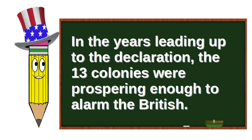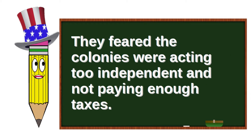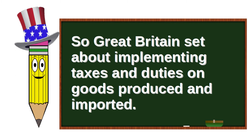In the years leading up to the Declaration, the 13 colonies were prospering enough to alarm the British. They feared the colonies were acting too independent and not paying enough tax. So Great Britain set about implementing taxes and duties on goods produced and imported.